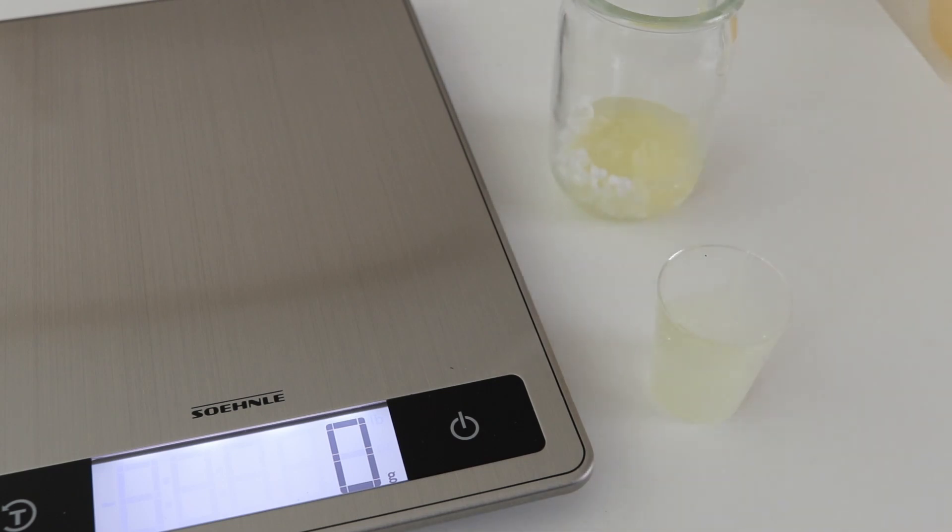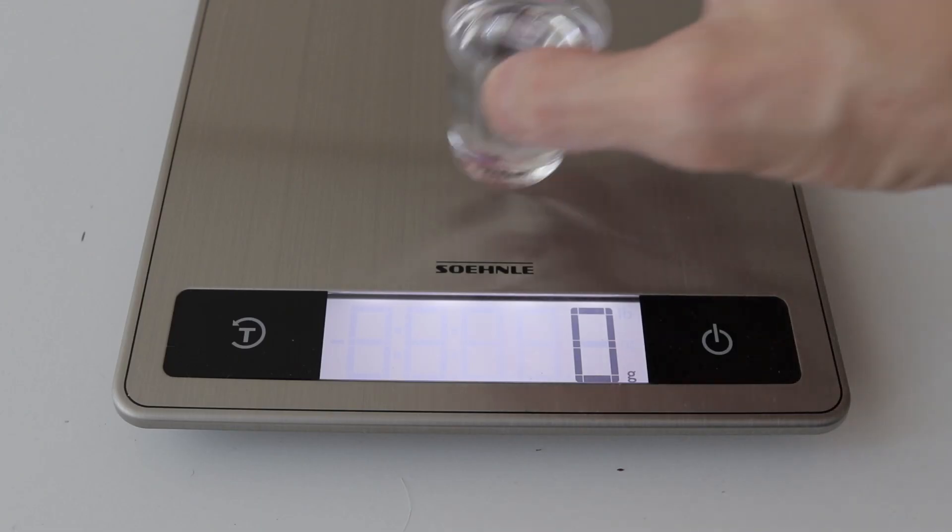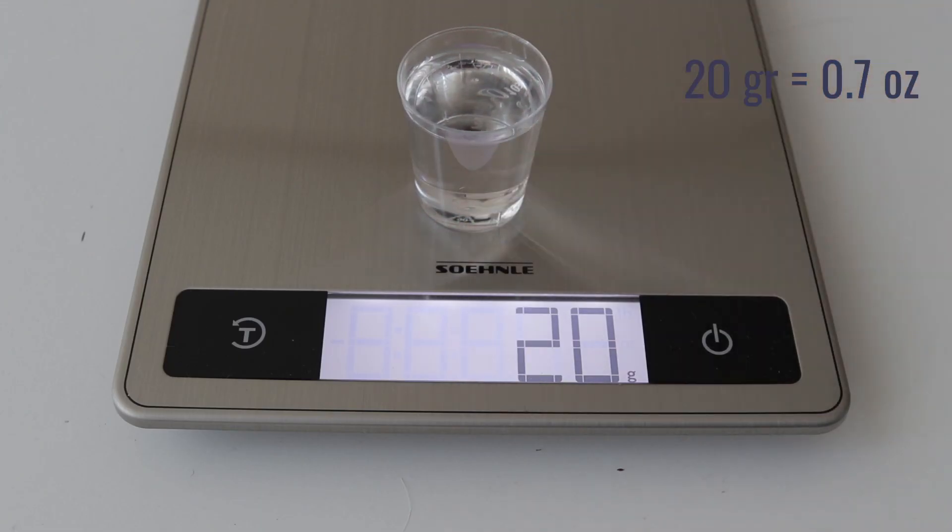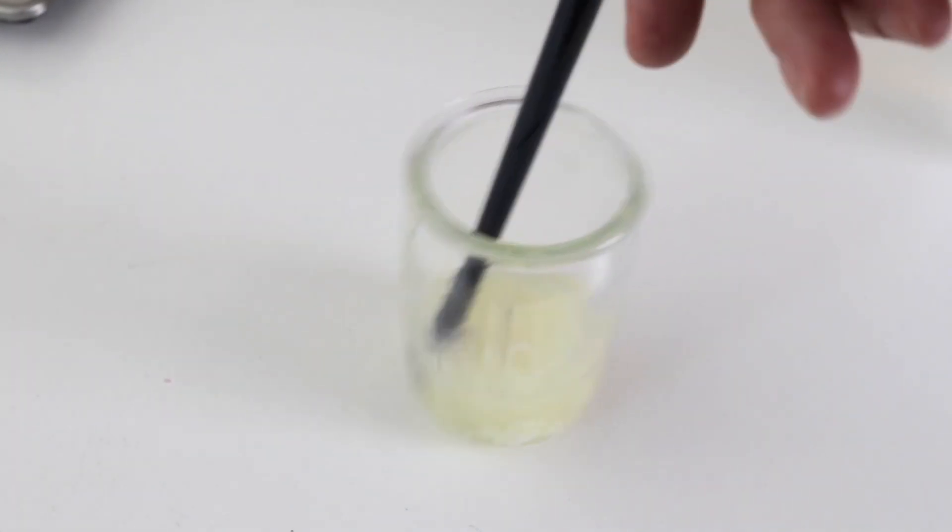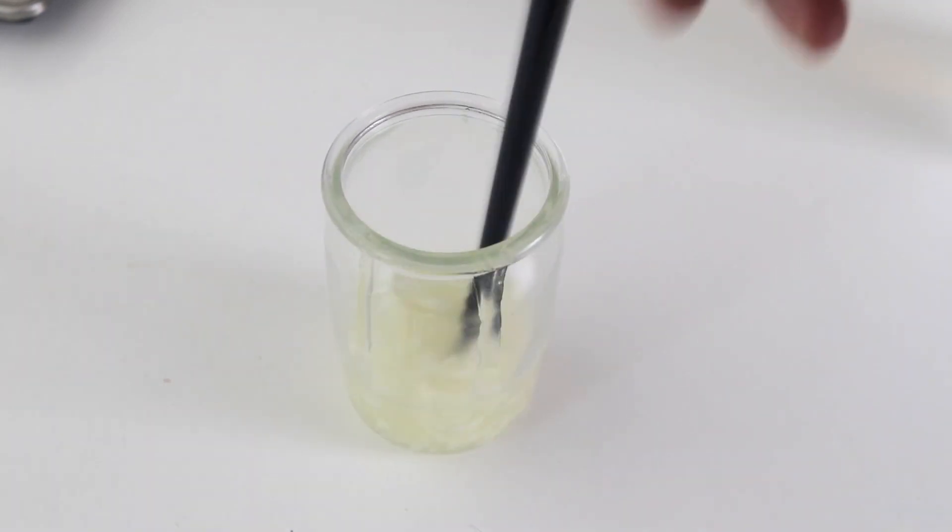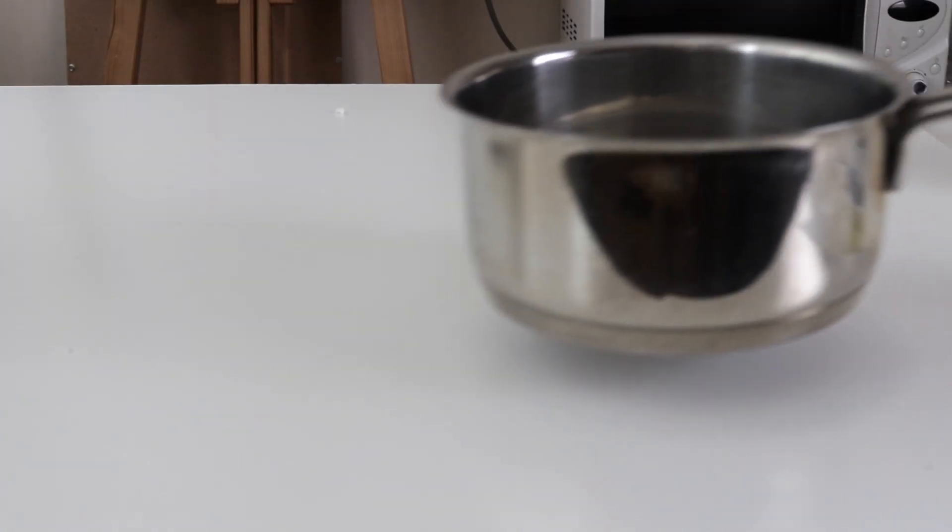And now gasoline. It's better to use purified gasoline. The one for lighters is good enough. 20 grams. Because rubber glue is liquid, gasoline can be poured less than specified in the recipe. Store it all together in the jar.